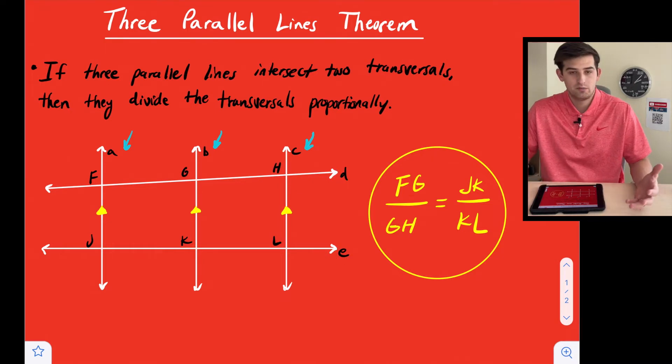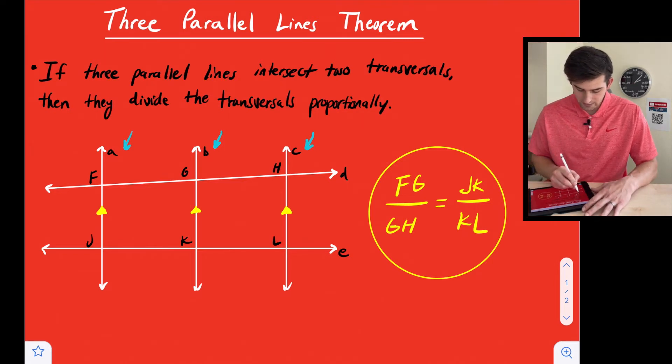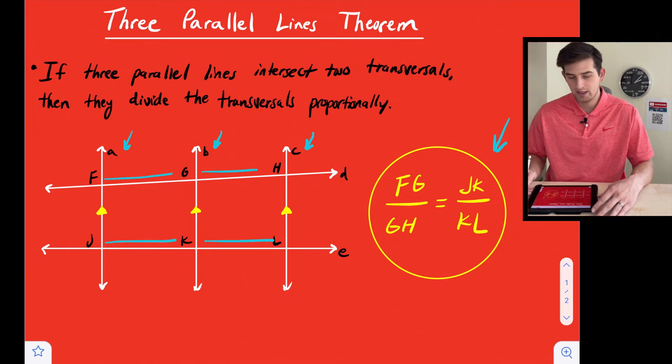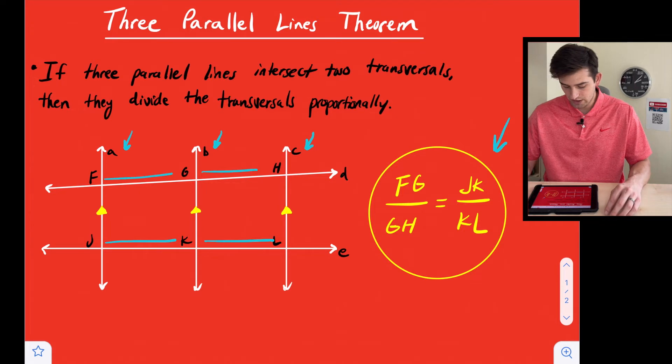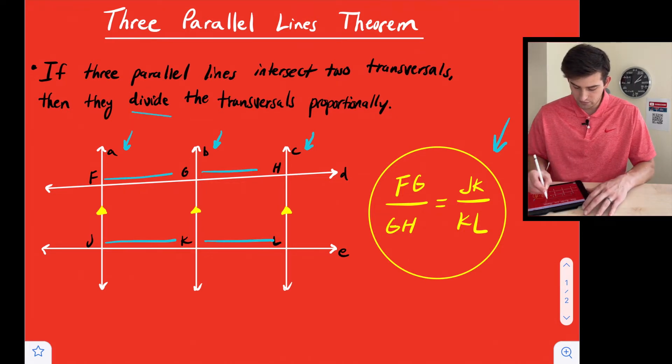So here's what our proportionality theorem tells us with these three parallel lines. It simply says the distance here, F to G over GH is proportional to JK over KL. And that's what we see right here on the right with this proportion. FG over GH is equal to JK over KL. So it divides the transversal proportionally.